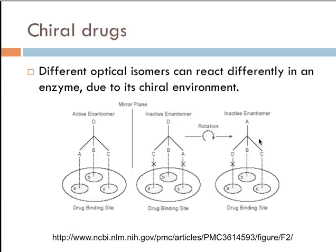A chiral drug is going to react differently in an enzyme due to its chirality. When you have two enantiomers of a chiral molecule, your active enantiomer is going to line up with the binding site, while the inactive one, no matter how you rotate it, is not going to line up. So a chiral drug is going to have one active enantiomer and one that is inactive.